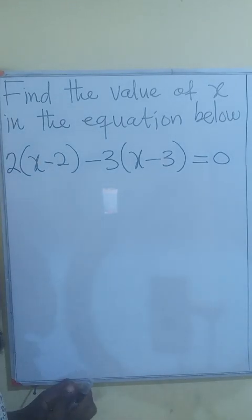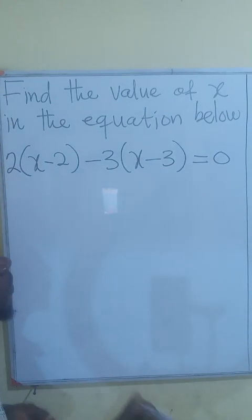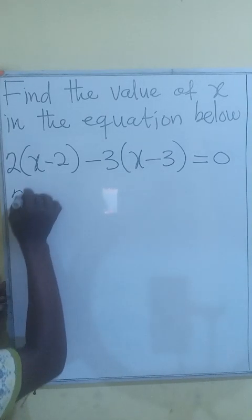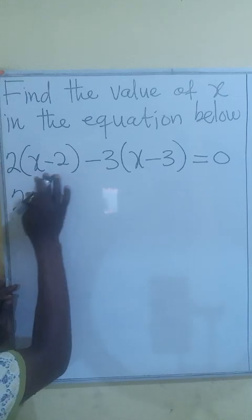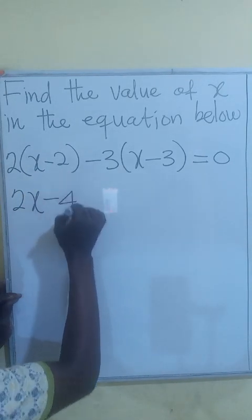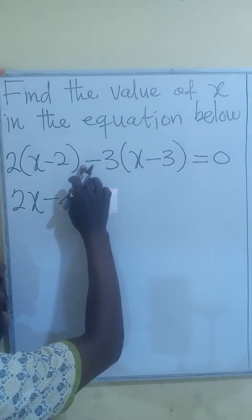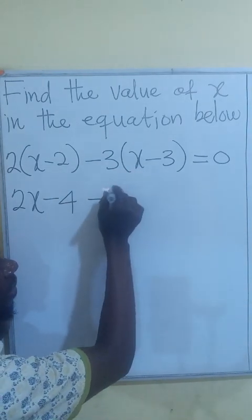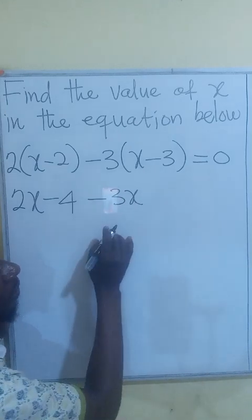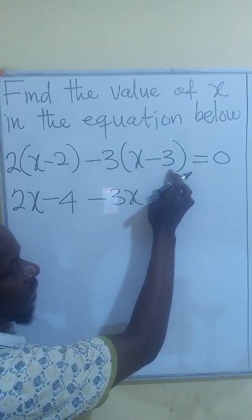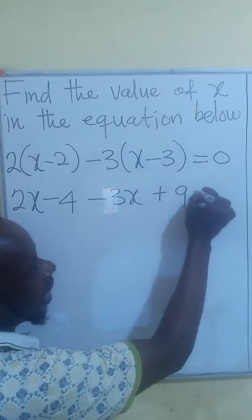Then we can be able to see if we can find the value of x. So 2 times x, that will give us 2x, then 2 times negative 2, that will give you negative 4, then the negative 3 will multiply x to give us negative 3x. Here will be negative 3 times negative 3, that will produce positive 9,